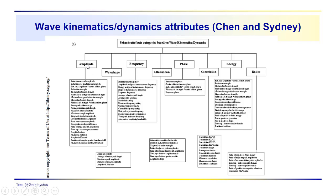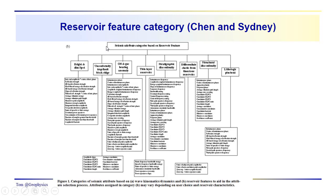We have seismic attributes - we're looking here at wave kinematic dynamics attributes from Chen and Sydney. They've grouped them into two categories. There are probably about 100 attributes right there for wave kinematics and dynamics.